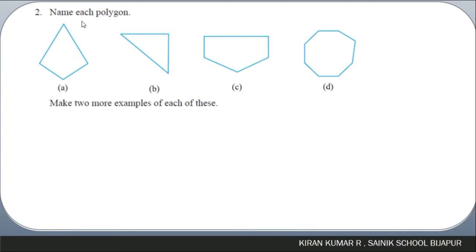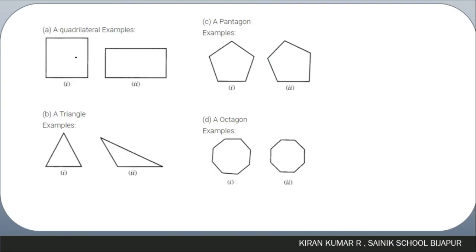Next question: name each of the following polygons and make two more examples for each. The first has four sides — it forms a quadrilateral. The second has three sides — it forms a triangle. The third has five sides — it forms a pentagon. The fourth has eight sides — it forms an octagon. Examples include: a square and a rectangle are both quadrilaterals.